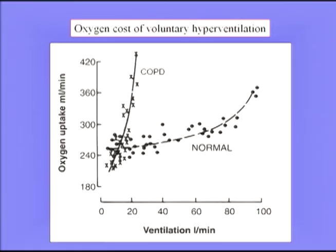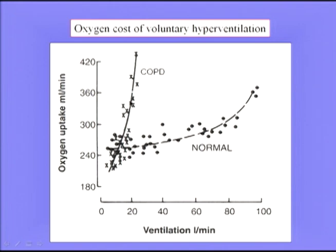These patients have a very high work of breathing — not surprising given their severe airway obstruction. This can be demonstrated by asking normal subjects to voluntarily hyperventilate: increasing ventilation to 80 liters per minute causes almost no increase in total oxygen uptake in normals. But in a patient with COPD, asking him to hyperventilate — which is very difficult due to dynamic compression — produces an enormous oxygen uptake, simply reflecting the tremendous work of breathing.